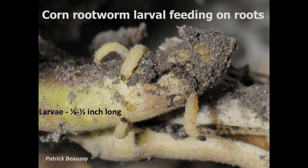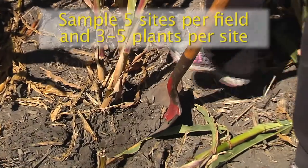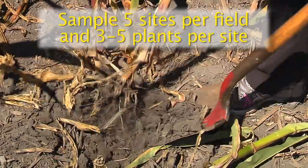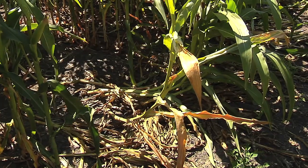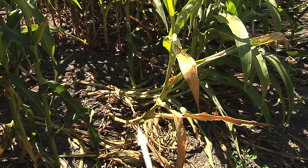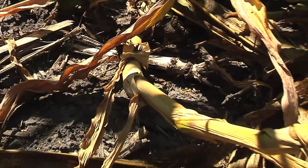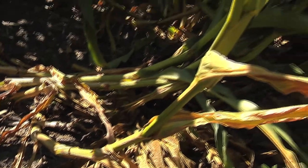To determine if there's larval activity feeding on the roots of the corn plant by corn rootworm, we need to dig up the corn plants and examine the roots. Another symptom of corn rootworm, which is evident in this plant, is the goose necking and the lodging of this corn plant.